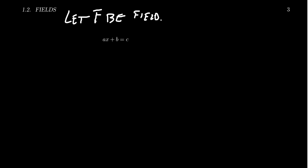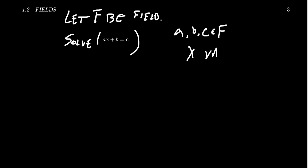All we know about the field F is that we can add, subtract, multiply, and divide numbers using the laws of associativity, commutativity, and the distributive laws. So let F be a field and let's solve the linear equation AX plus B equals C. The coefficients A, B, and C are numbers that belong to the field, and X is a variable — we want to find a scalar in the field F that we can assign to X to satisfy this equation.